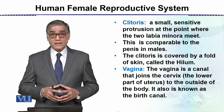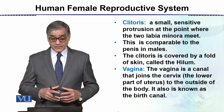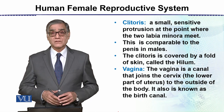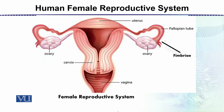The Vagina is a canal that joins the cervix — that is, the lower part of the uterus — to the outside of the body. This is also called the birth canal. The vaginal opening is covered by the Labia Minora and the Labia Majora. The Vagina is the canal which receives the Penis during intercourse, and the cervix is the point separating the vagina from the uterus.